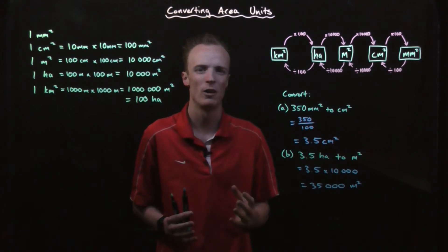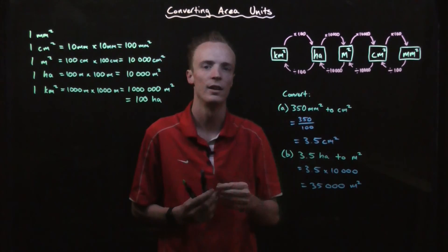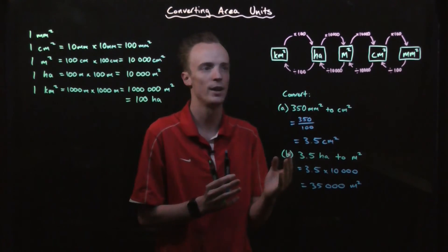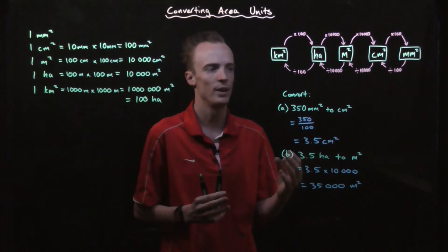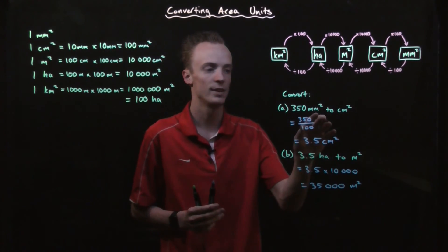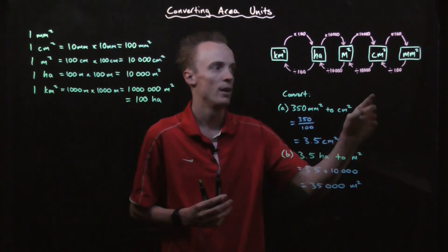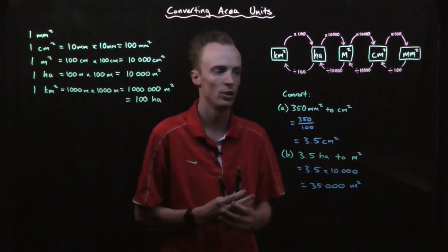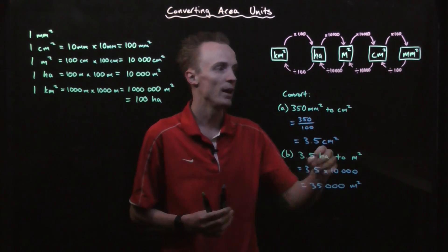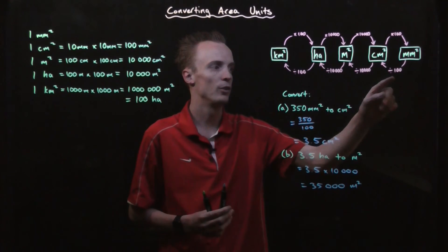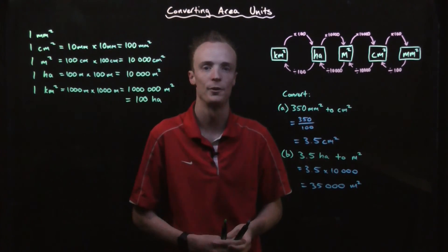To summarise: to convert area units, we use this conversion chart to move between all the different units. We need to look at what units our measurement is currently in — in this case square millimetres — and look at where we want to move it to, in this case square centimetres. We follow the arrows and do what it tells us, which in this case was to divide by 100.